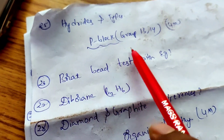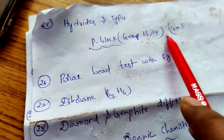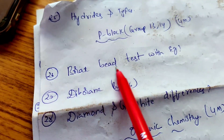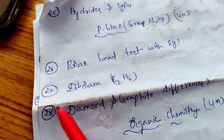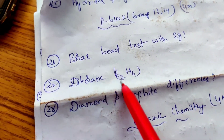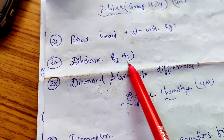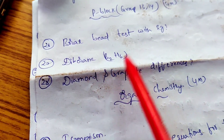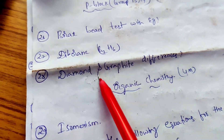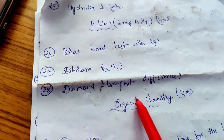P-Block elements chapter covers Groups 13 and 14 in the first year, with 4-mark questions. What is the Borax bead test — with example. Write the structure and preparation of diborane (B2H6) — this is the most important question. Write the differences between diamond and graphite. So this completes the 4-mark and 8-mark question overview for the major chapters.